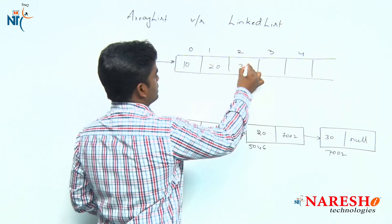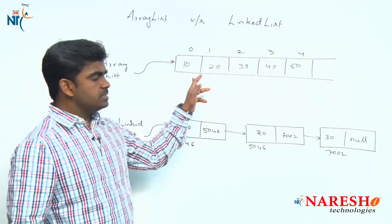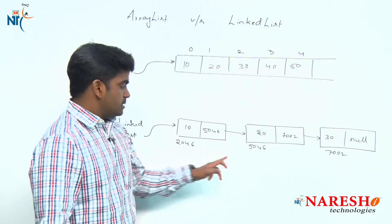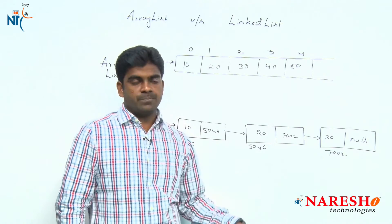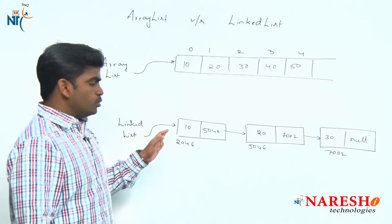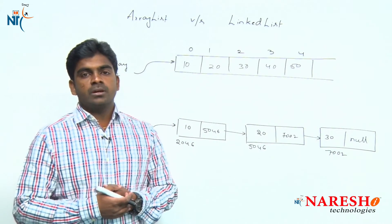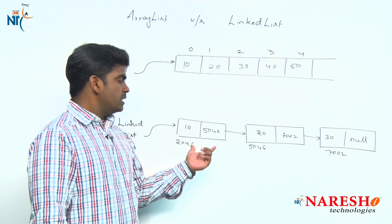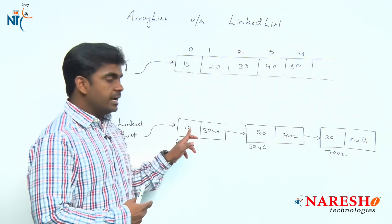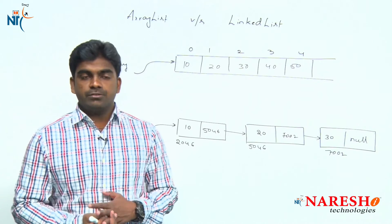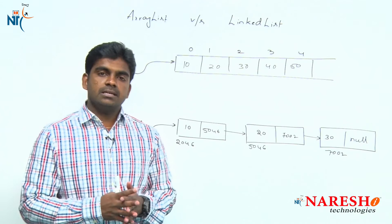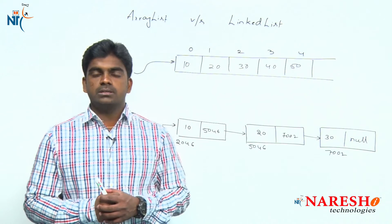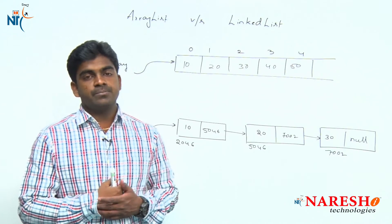In ArrayList, elements are stored in consecutive side-by-side locations so we can access them easily using index numbers. In LinkedList, element processing is difficult because memory locations are random and we must travel from the first node to the target node. LinkedList also occupies more memory because each node stores a hash code field, a data field, and a link field. So construction time is high, accessing is very slow, and memory usage is much more compared to ArrayList.